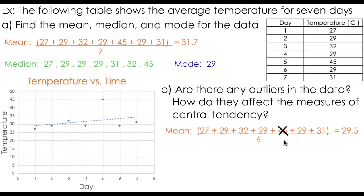We can analyze how this 45 degree temperature affects the mean, and recalculate the mean using a total of six temperatures. By doing this, the average temperature drops to 29.5 degrees, which is much more in line with both our median and our mode. So the 45 degree outlier definitely affects the mean.